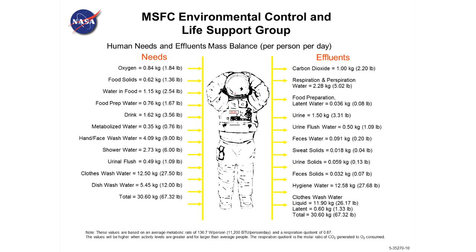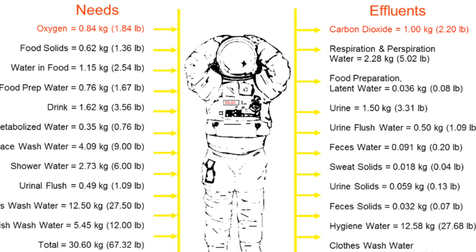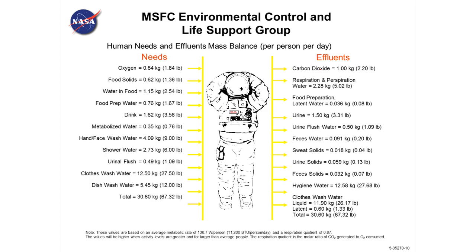This came out of the NASA Marshall Space Flight Center ECLSS group. You'll see other tables like this — the numbers change slightly — but it's important to get some sense of how much oxygen, how much water, and so on, a human being needs on a typical day in space. You can see here the oxygen coming in, the carbon dioxide going out, and so on and so forth. One thing I want to caution you about when you look at tables like this: